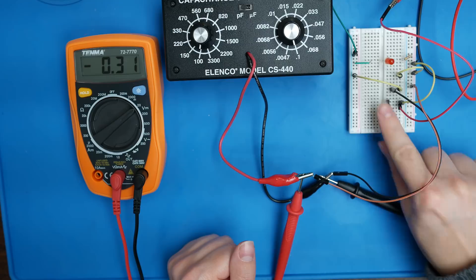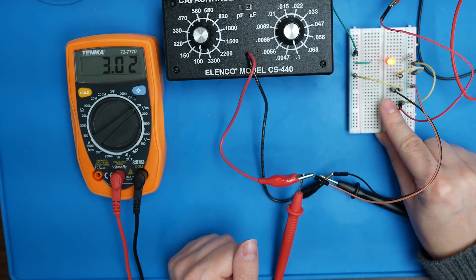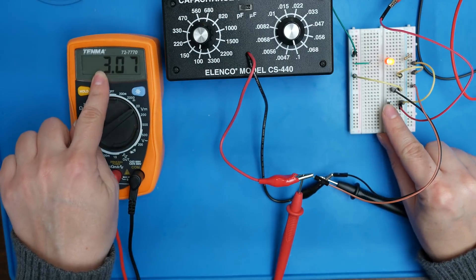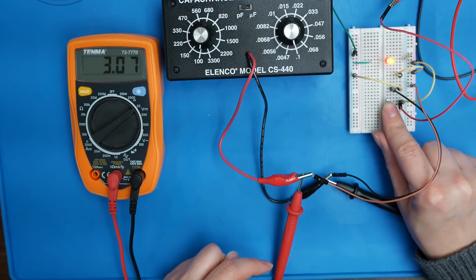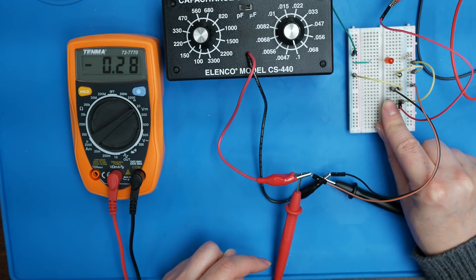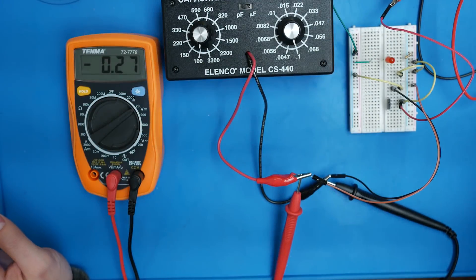So I have it set to my lowest value. I'm going to turn this on. Charges it up to 3 volts. Let's see how fast that discharges. Pretty fast. Now I'm going to turn off my power supply.